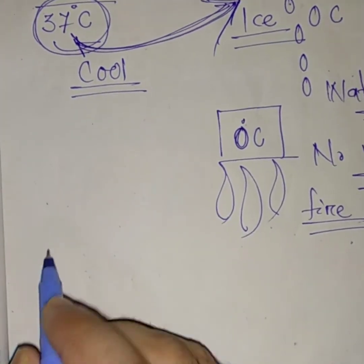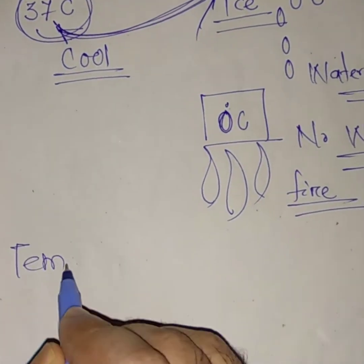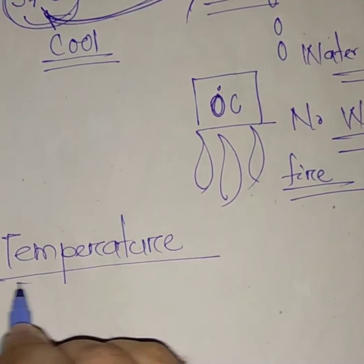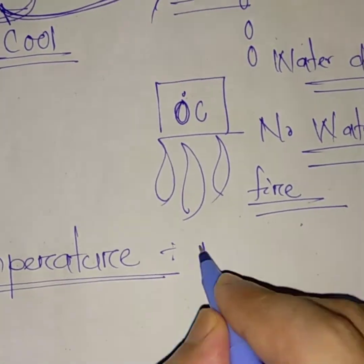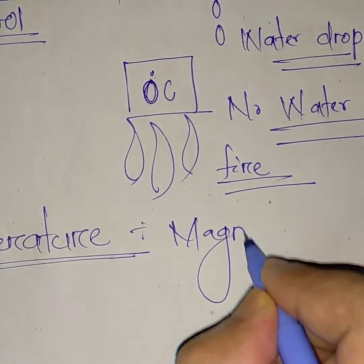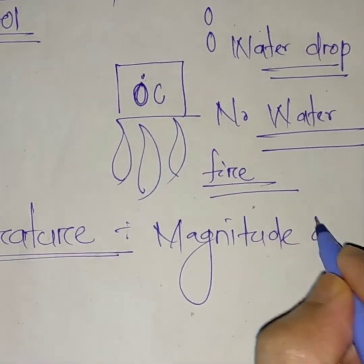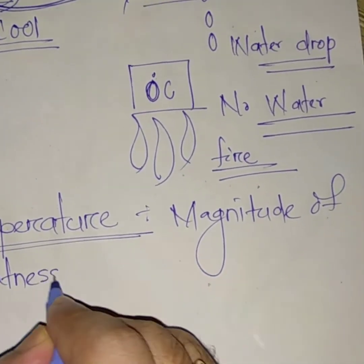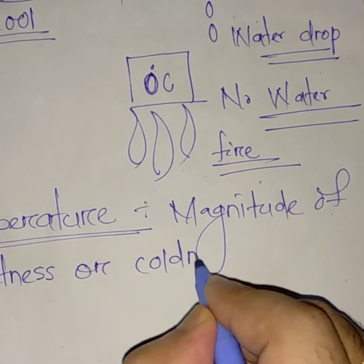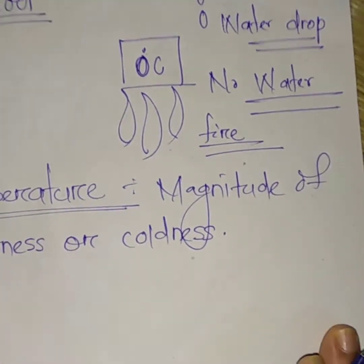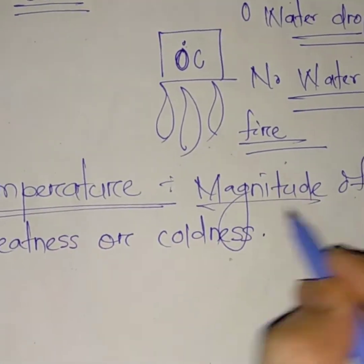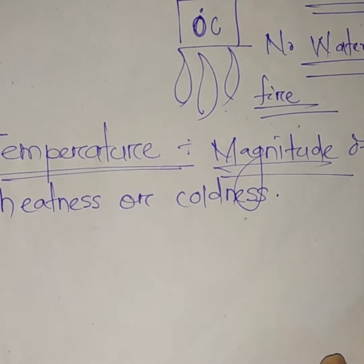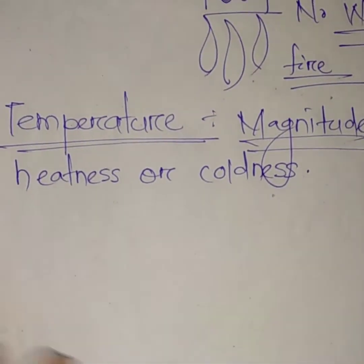Next, let's move to temperature. What is temperature? Temperature is the magnitude of hotness or coldness. Magnitude means mathematical value.